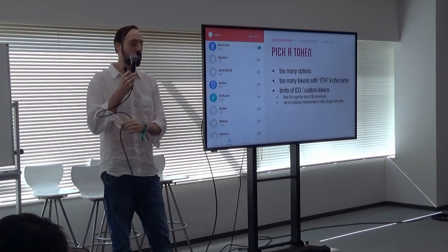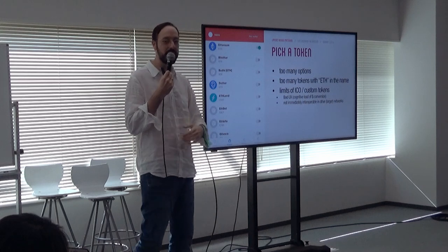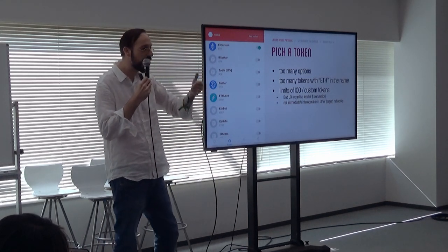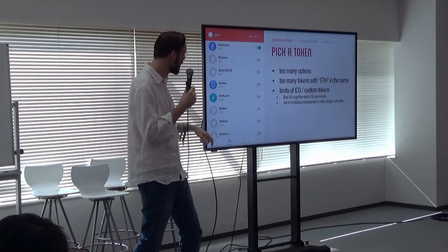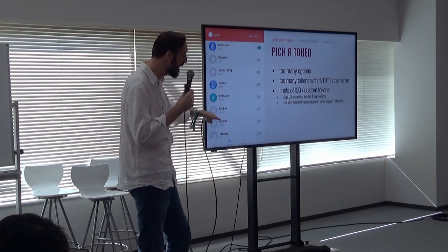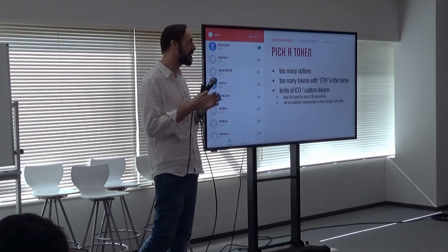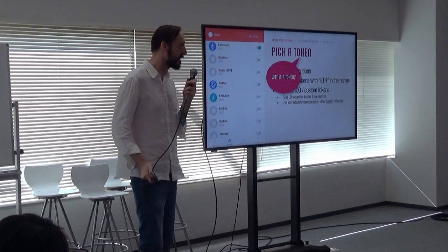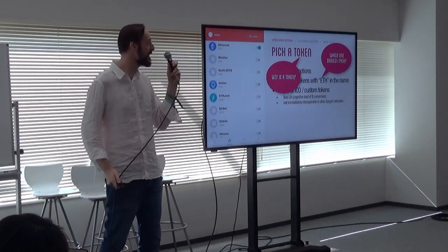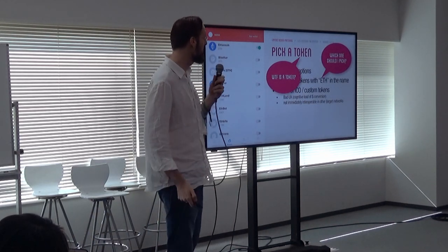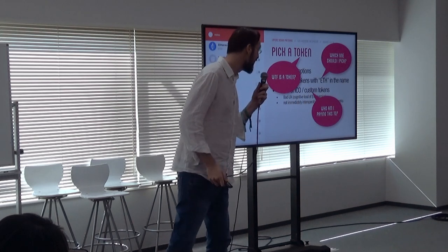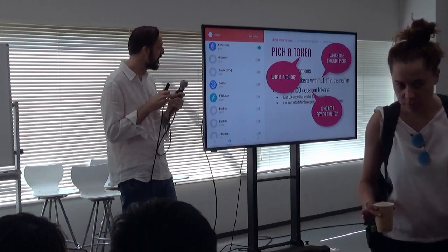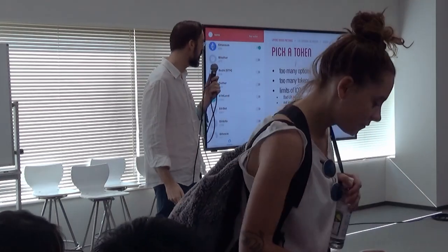Pick a token — this is a problem. State channels and Plasmas say: hey, you can onboard with any token, deposit any token. So a new user goes there and sees which one do I choose. And there's a lot of things called ETH, ETH, ETH. This is one of the questions they have: which one do I pick? What the fuck is a token? Which one should I pick? And what am I paying this to? They have no clue of why they are doing this and why they are onboarding on these wallets.